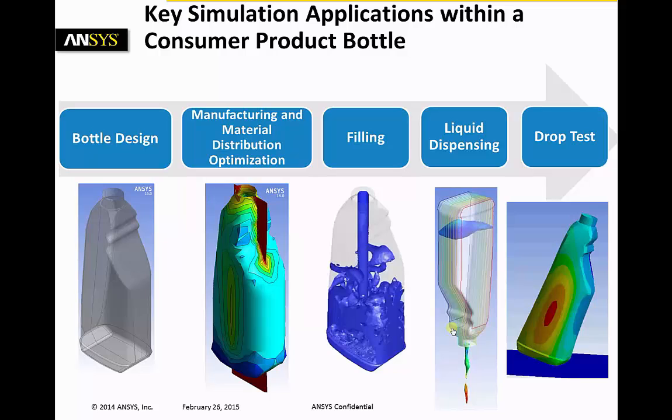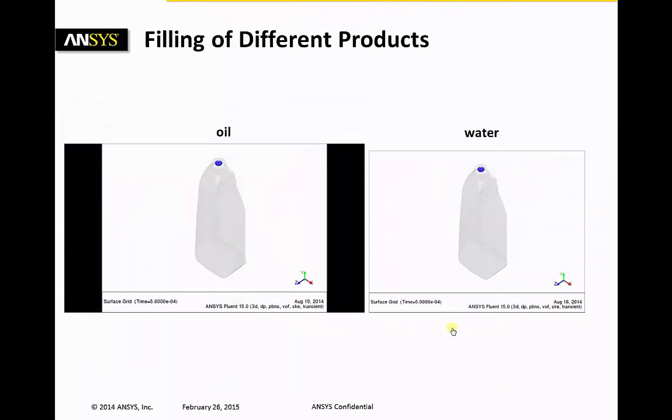The next step will be looking at the fill process of the bottle. The fill pattern is certainly affected by the liquid properties. For example, oil is 1000 times more viscous than water and it can be clearly seen how that affects the fill pattern.